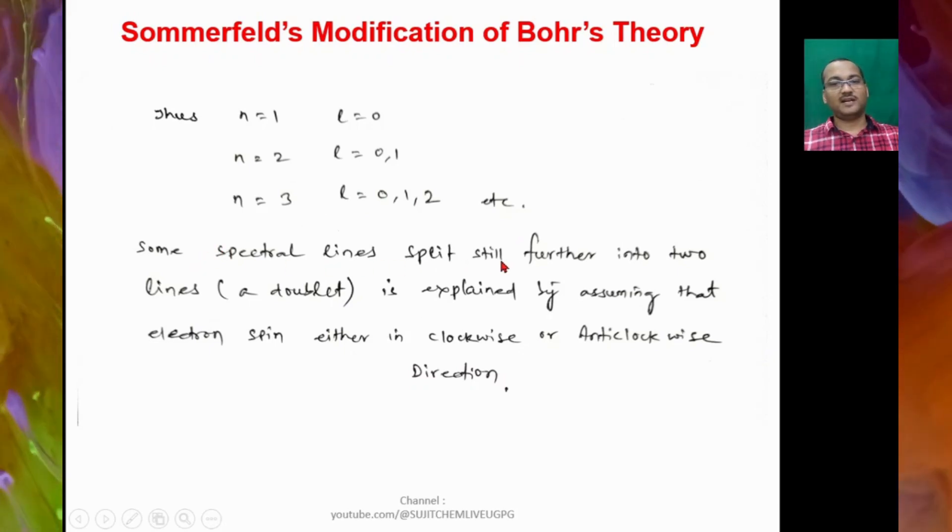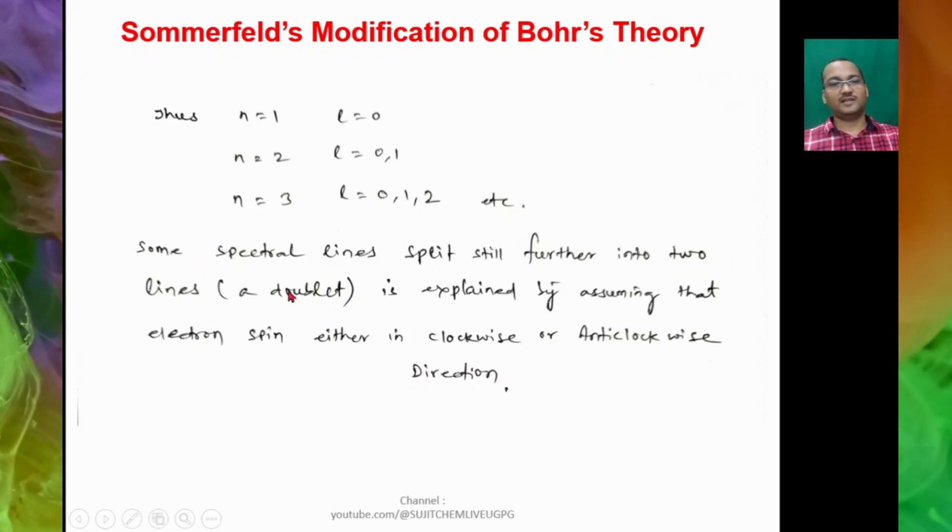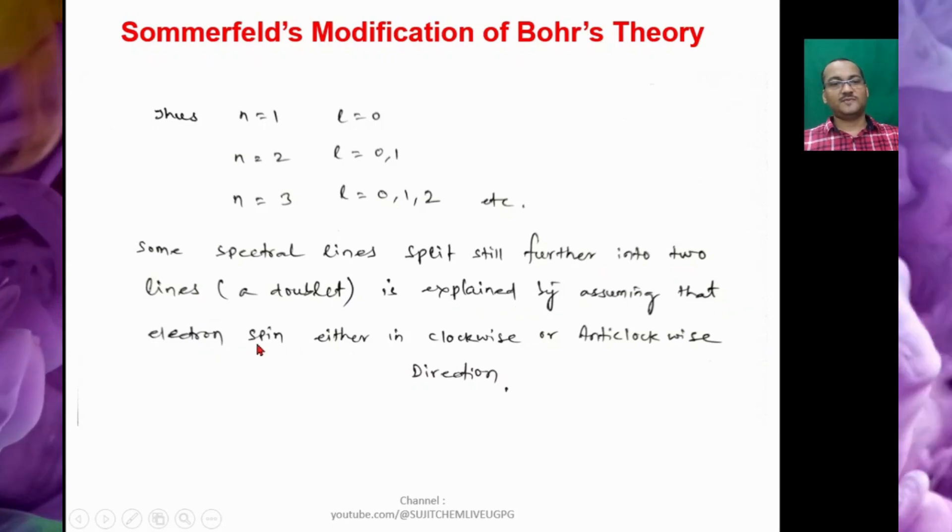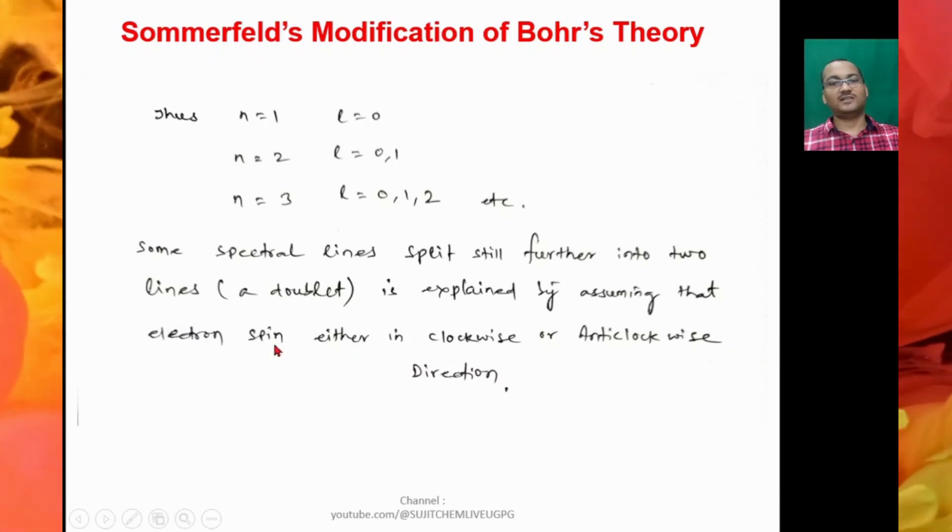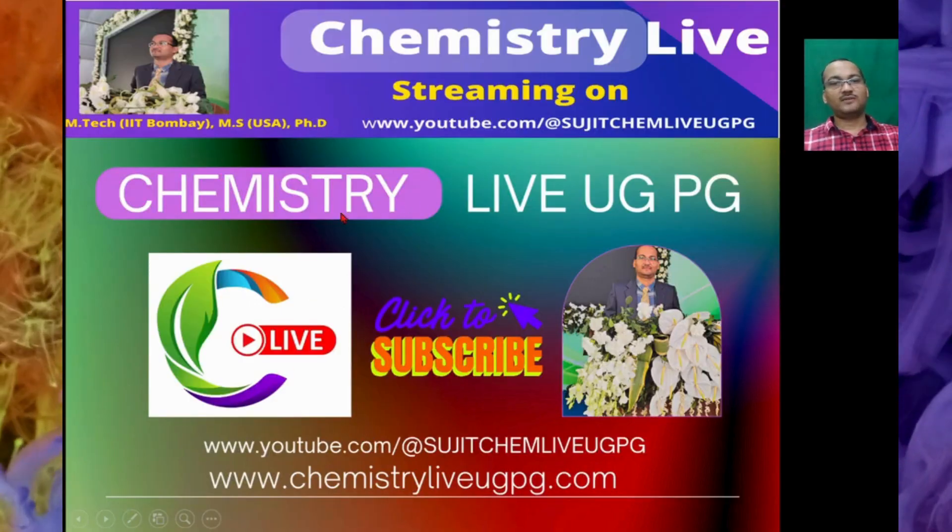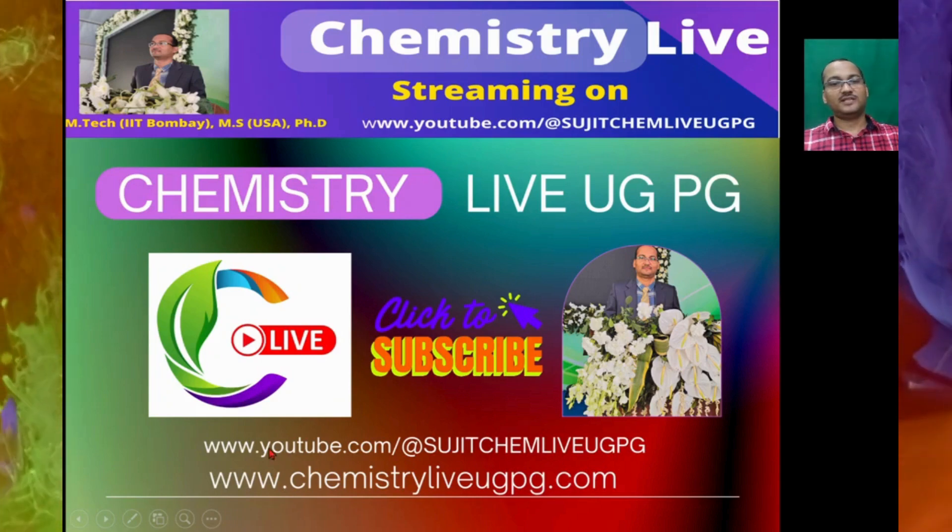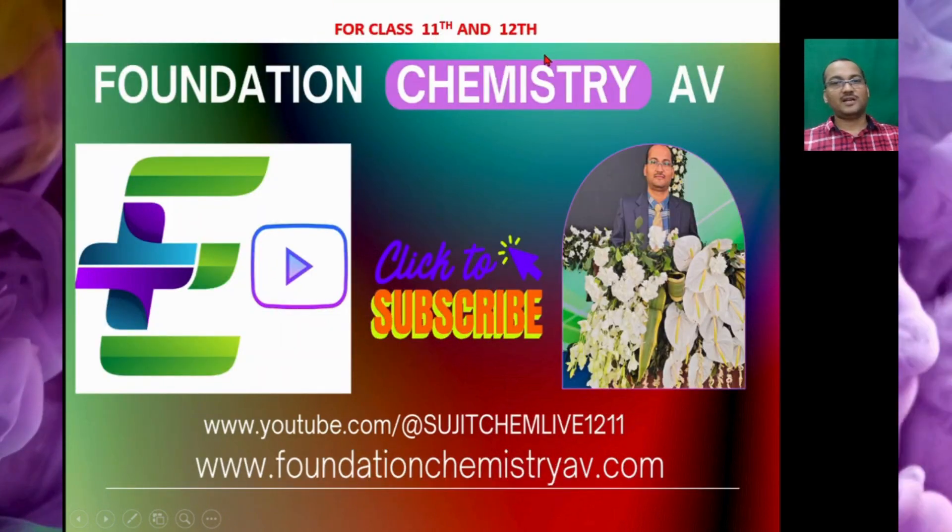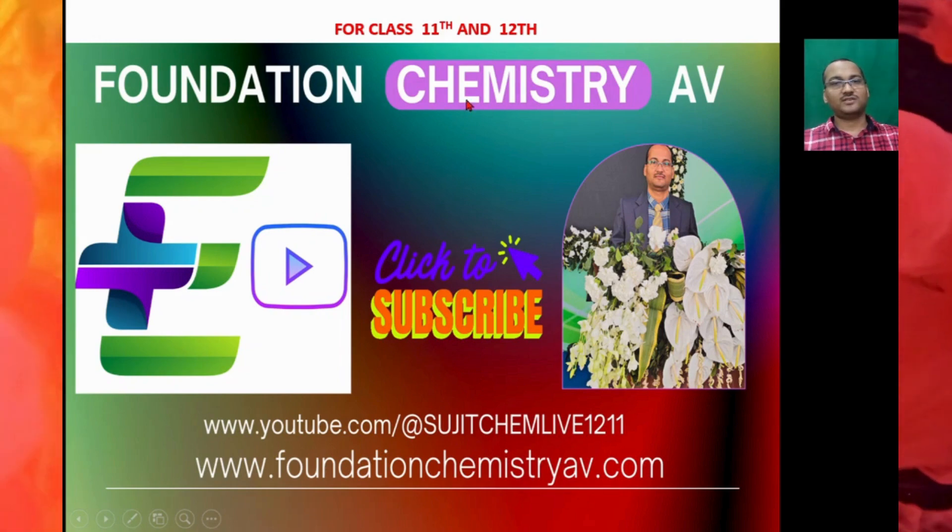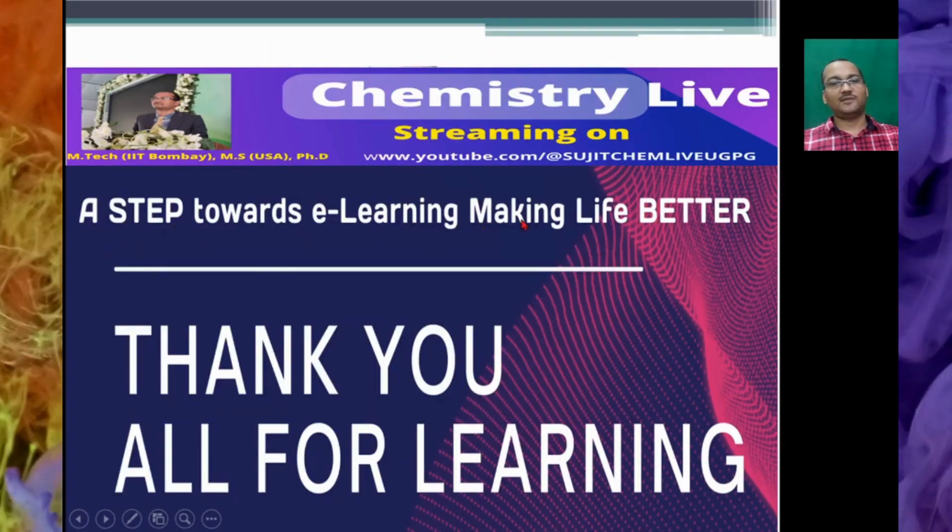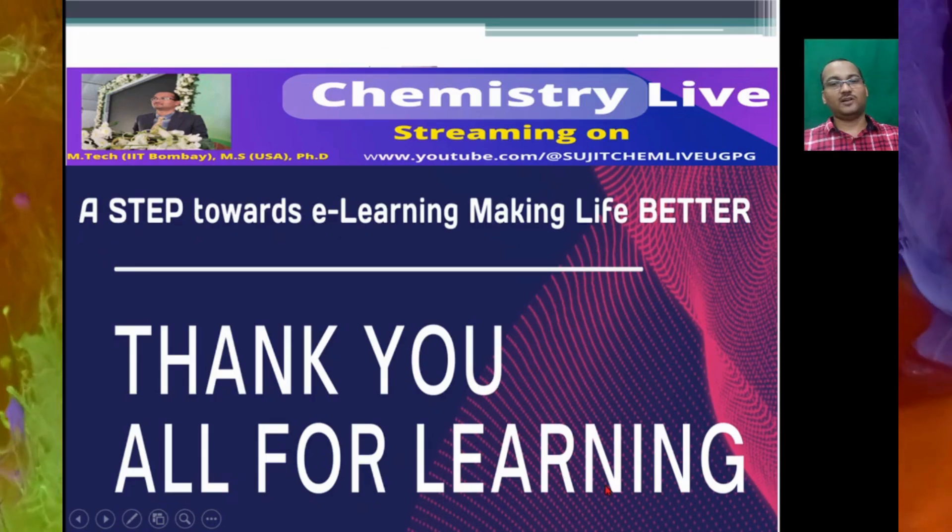So some spectral lines split still further into two lines, a doublet, explained by assuming that the electron spins either in clockwise or anticlockwise direction. So please subscribe to our channel Chemistry Live UGPG. This is also available on the website www.chemistryliveugpg.com. For class 11th and 12th students, this is the channel Foundation Chemistry AB. So this is a simple step towards e-learning, making life better. Thank you all for learning.